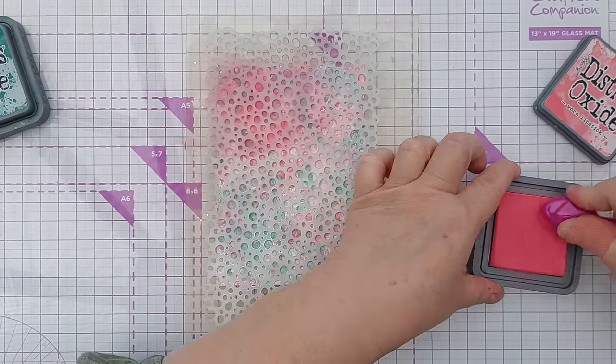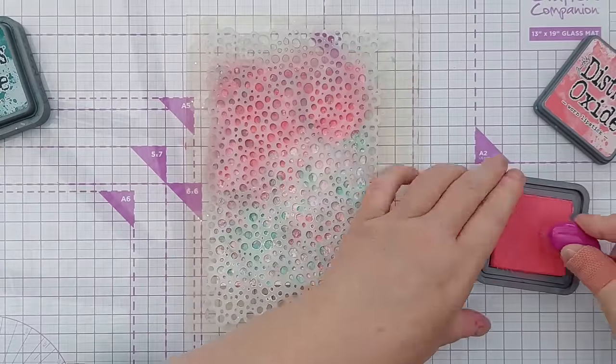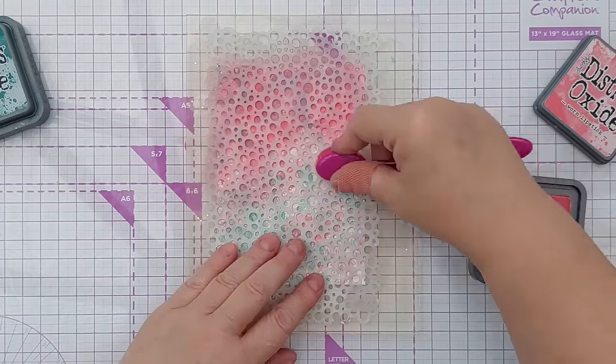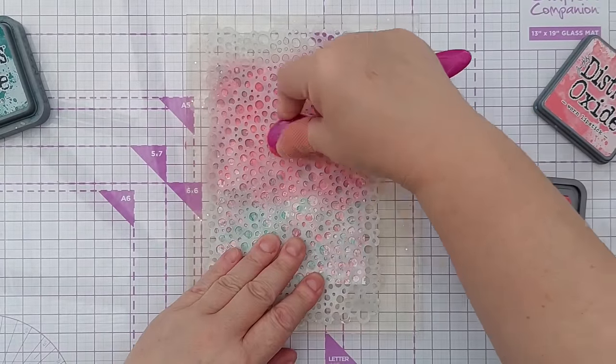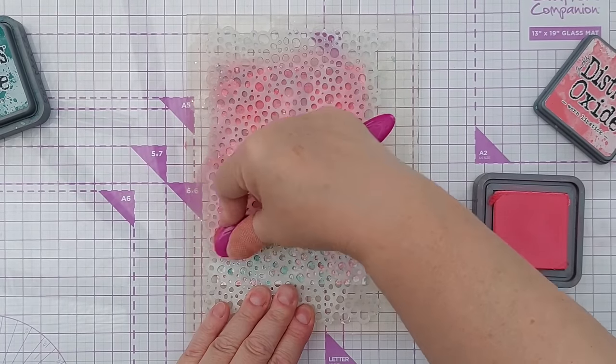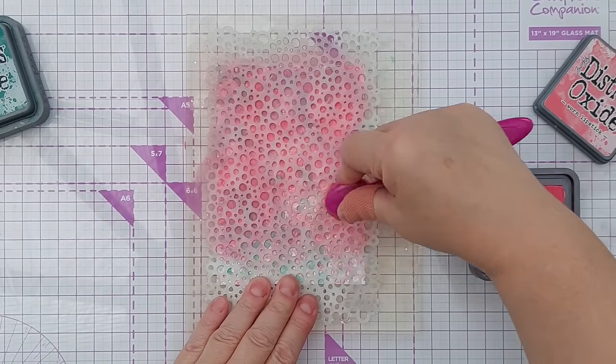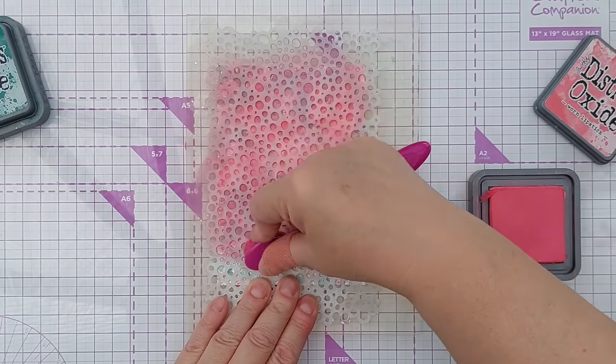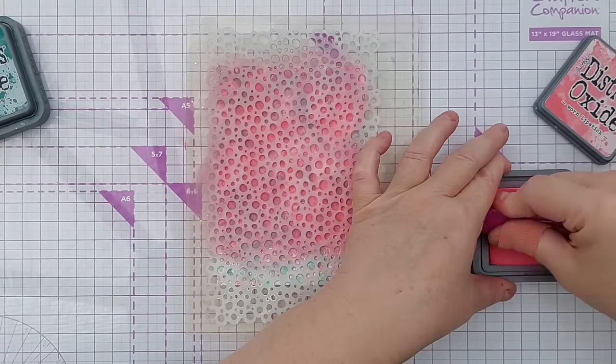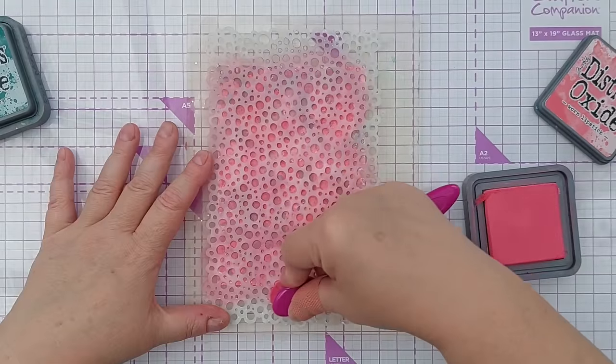So I've got this snowy stencil, which seems appropriate for Christmas cards. And I'm going to blend the warm lipstick through. Because I'm not diluting it, I'm not adding water, the Distress Oxide will sit on top of whatever's there and be quite bold. And I'll bring back a bit of the brightness.